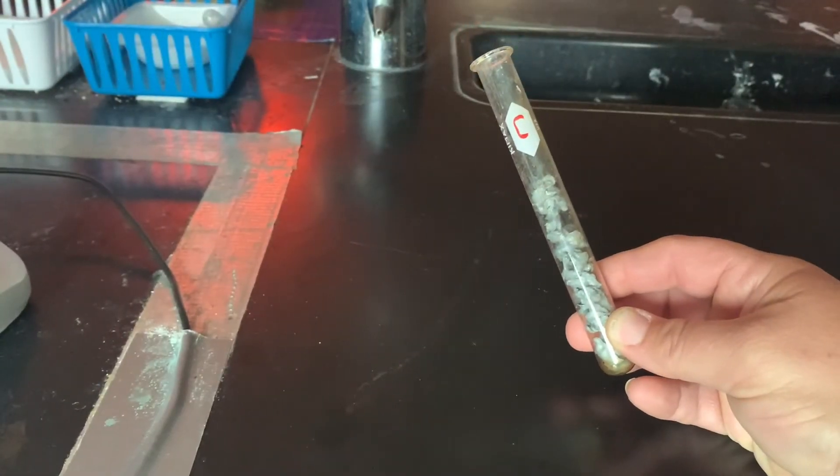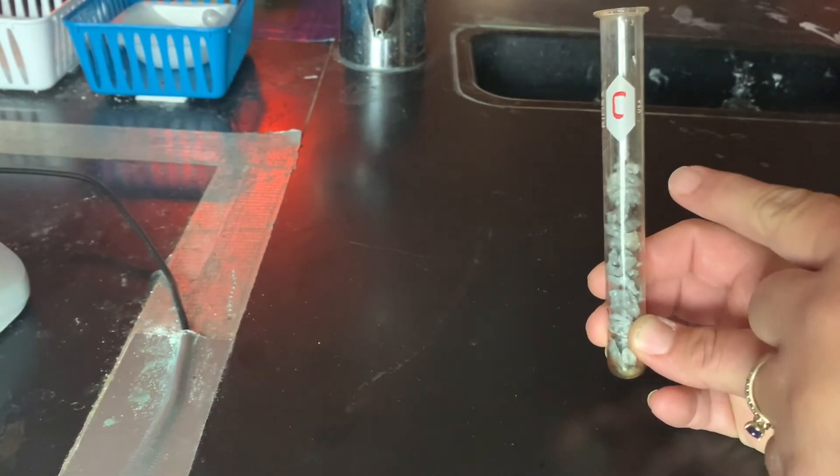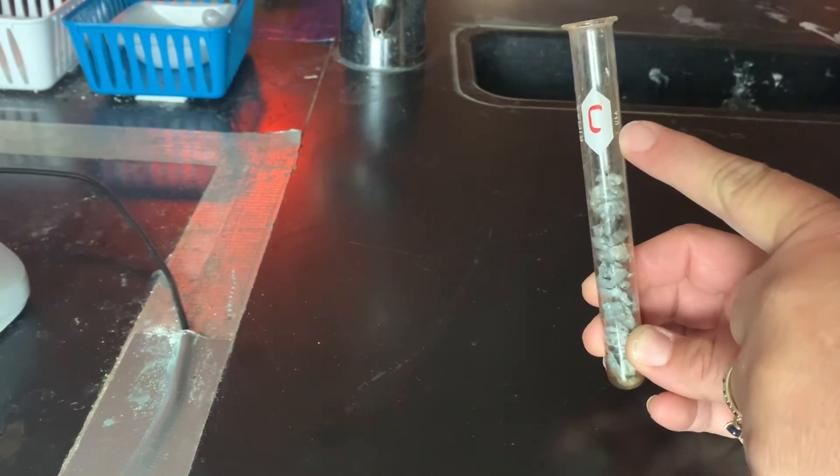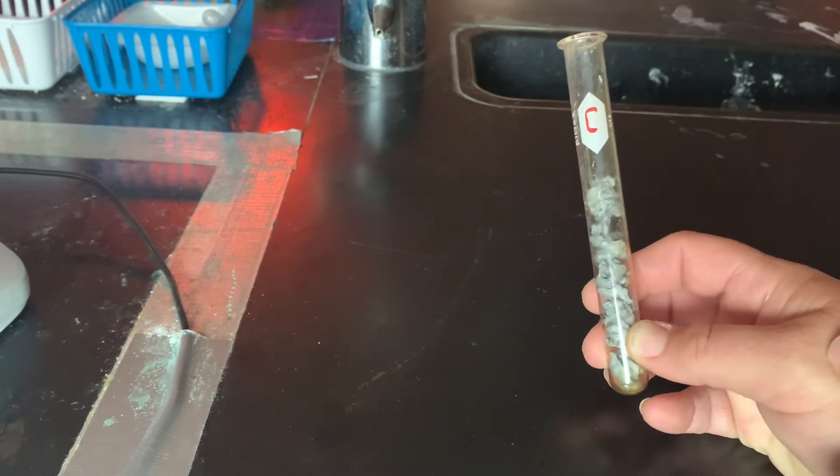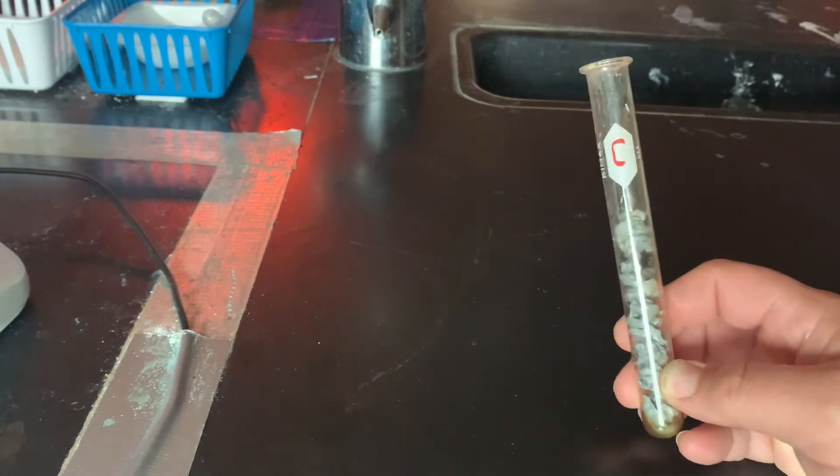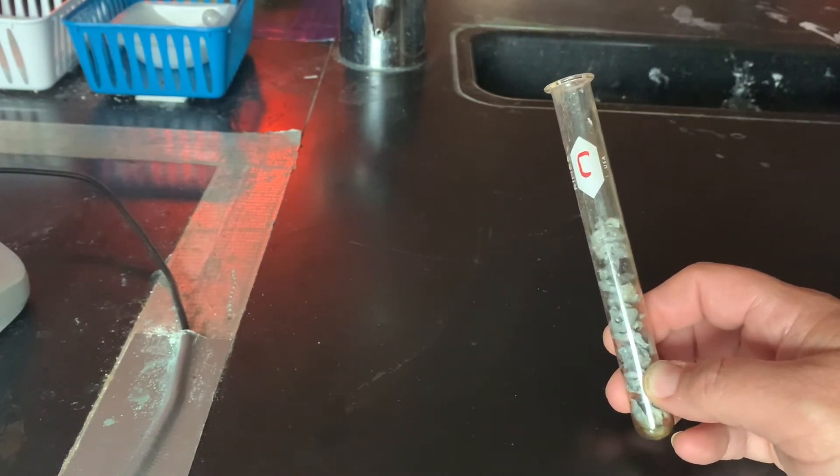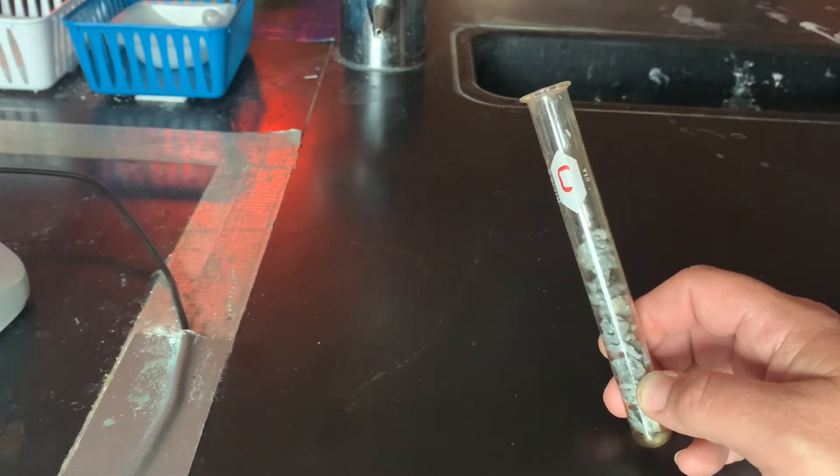Here I have my zinc sample. I placed it in my test tube. I want to go up at least halfway. I would make sure that I label my test tubes because I have three of those. Go ahead and measure out all three and get them ready to go in the water bath.